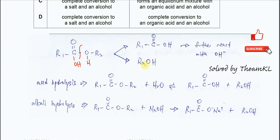If we use alkaline for the hydrolysis — meaning hydrolysis under alkaline condition — the carboxylic acid will further react with the hydroxide. That's why hydrolysis under alkaline condition will form different products than under acidic condition.